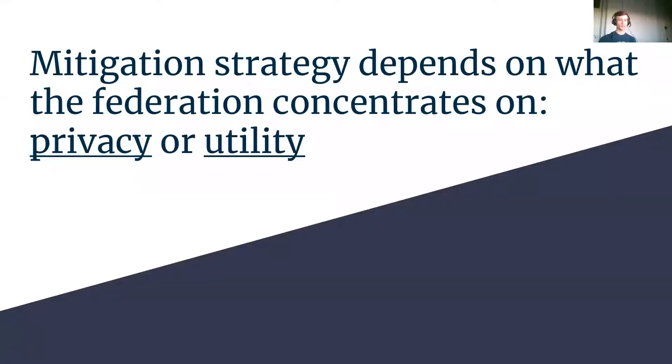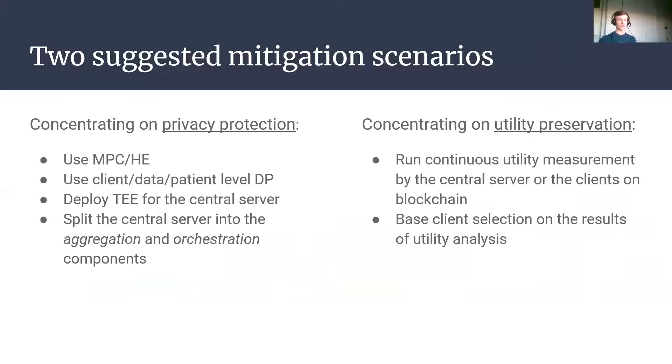So, we discussed the attacks, we saw how bad they can get, how do we actually mitigate them? Well, that depends, is the answer. It depends on what the federation wants to preserve first, the privacy or the utility. The reason for that is, when we try to preserve privacy, we could use components such as secure multi-party computation, homomorphic encryption, differential privacy and others, but they all have an adversarial effect on the accuracy of the end model.